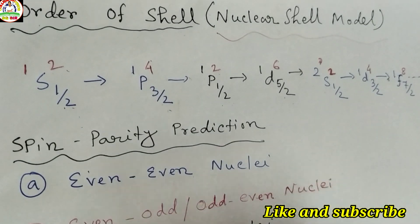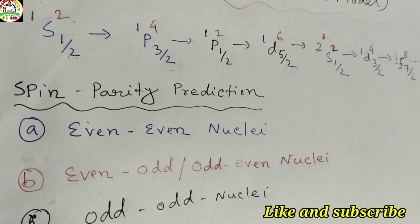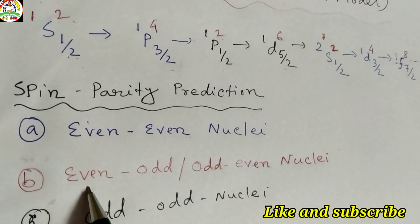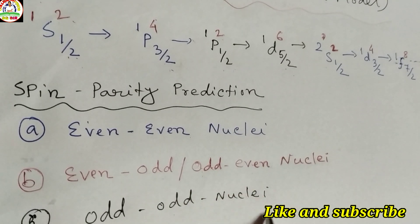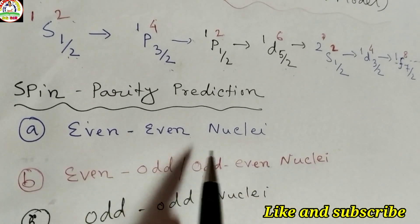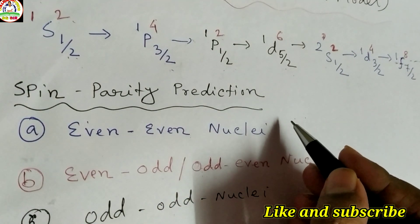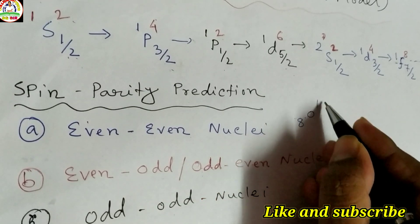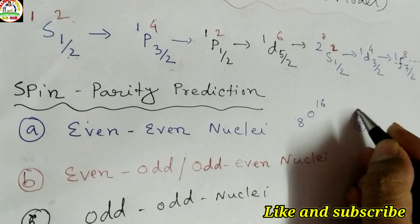Now I discuss spin parity prediction. There are mainly three types of nuclei: even-even nuclei, even-odd or odd-even nuclei, and odd-odd nuclei. Even-even nuclei means both the proton number and neutron number are even. For example, oxygen-16 (8O16) has proton number 8 and neutron number 8, so it is an even-even nucleus.